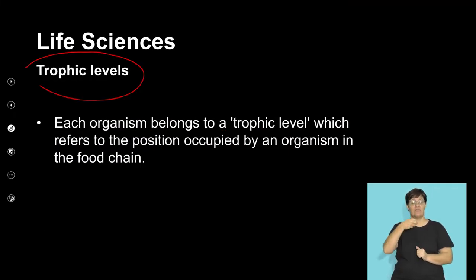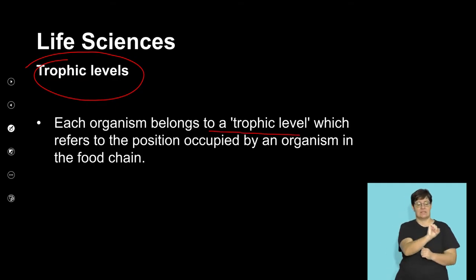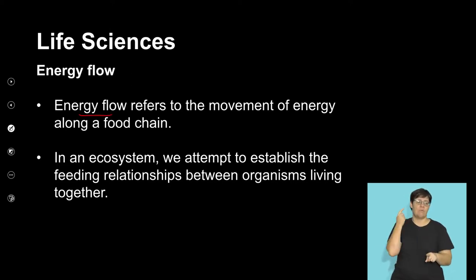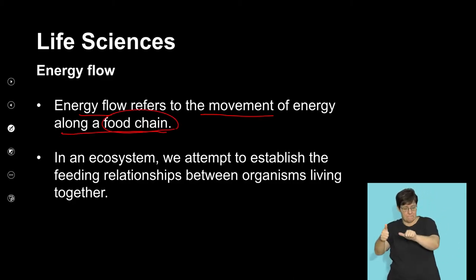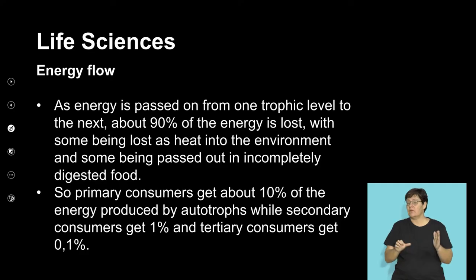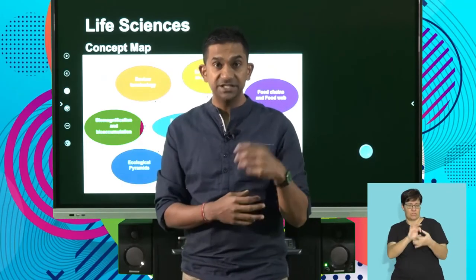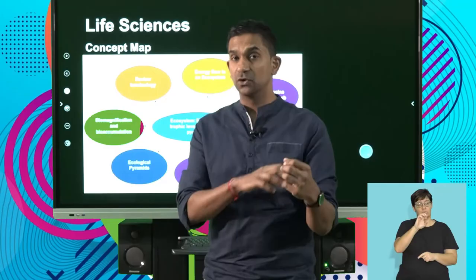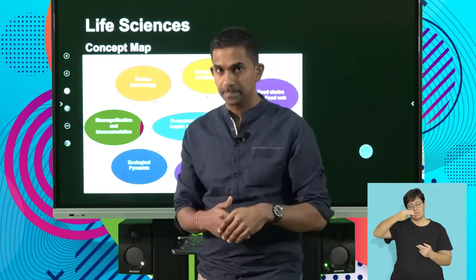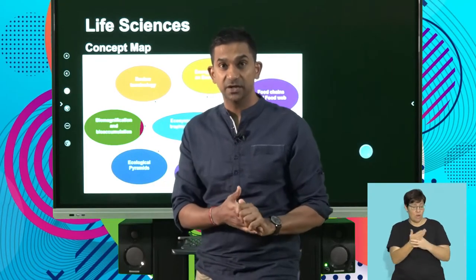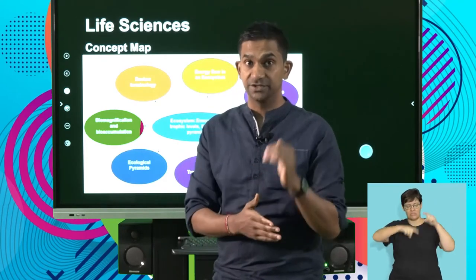Each organism belongs to a specific trophic level — the position that an organism occupies in a food chain. Energy flows from one trophic level to the next, and that movement is energy moving through from autotrophs all the way to tertiary consumers. Understanding energy flow is important in understanding how an organism survives in a food chain. In our next part of the lesson, we're going to look at how energy flows through an ecosystem and the different trophic levels.